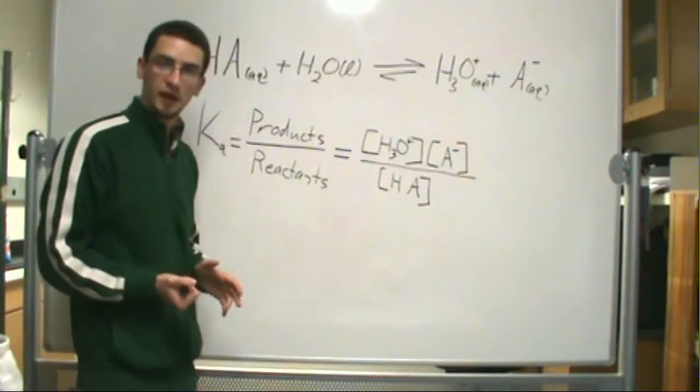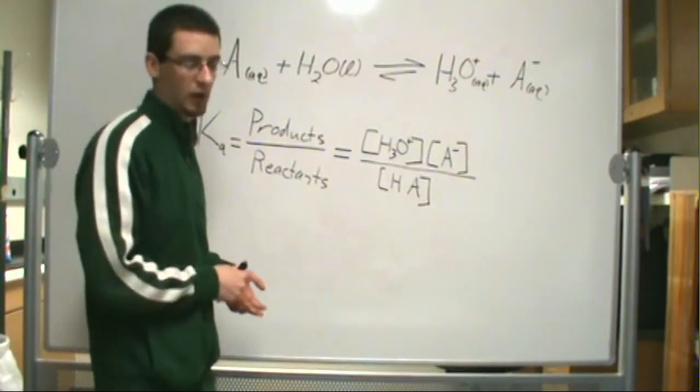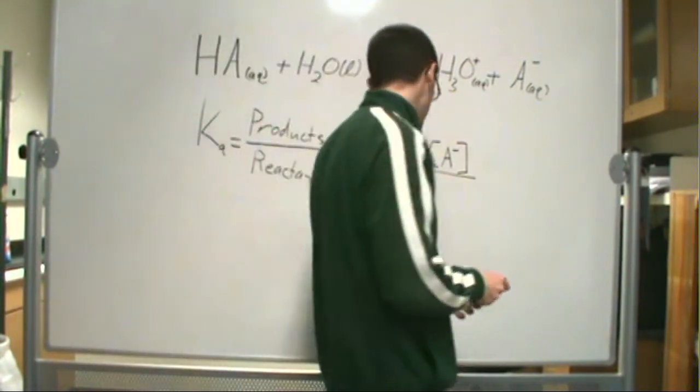For diprotic and triprotic acids, you can have Ka1, Ka2, or Ka3 in the case of triprotic acids. So let's look at a basic example.